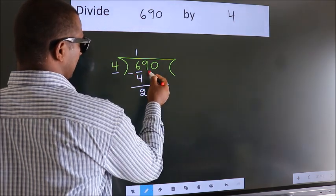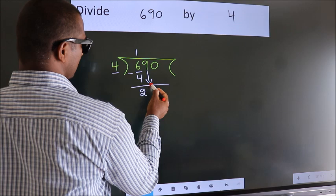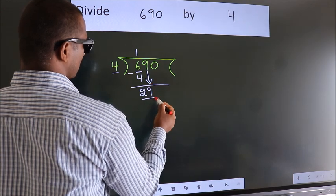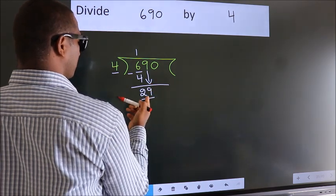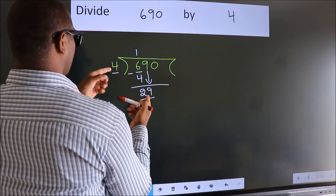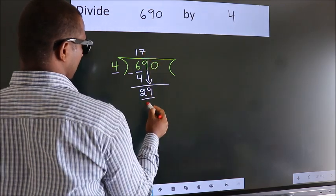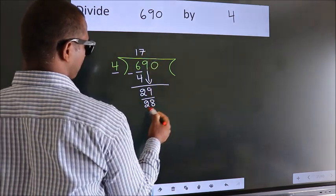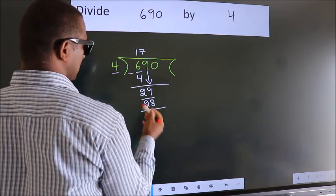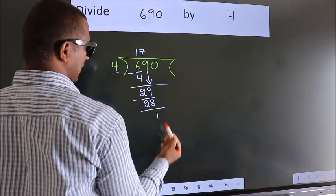After this, bring down the next number. So 9 down. We have 29. A number close to 29 in the 4 table is 4 sevens, which is 28. Now we subtract. We get 1.